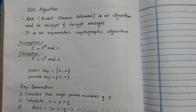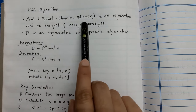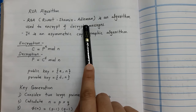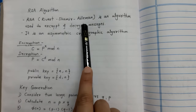Hello everyone, today we are going to see RSA algorithm. RSA algorithm is used to encrypt and decrypt messages. This algorithm is developed by three authors: Rivest, Shamir, and Adelman. That's why the name of the algorithm is given as RSA — Rivest, Shamir, Adelman.